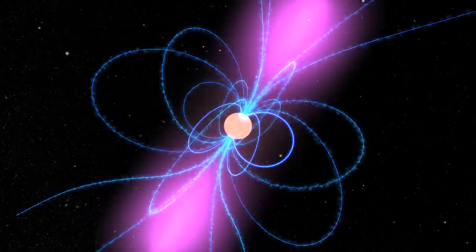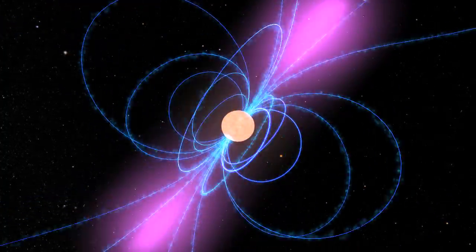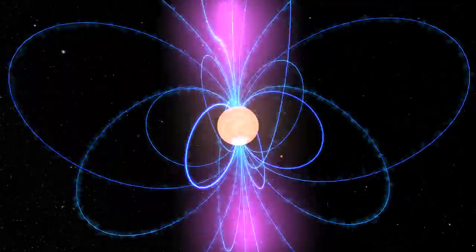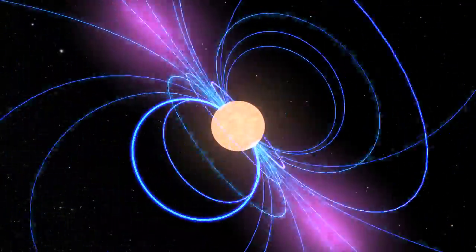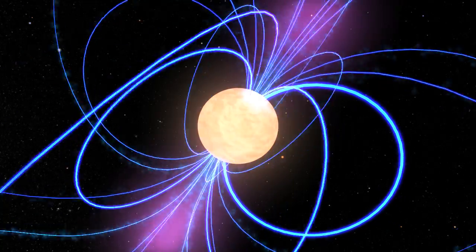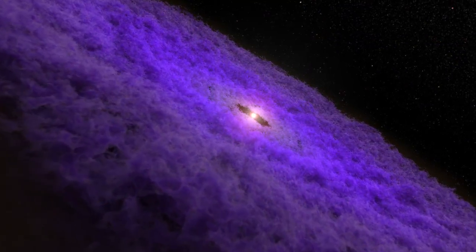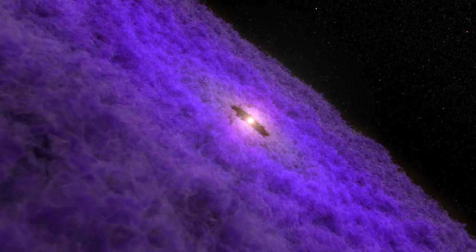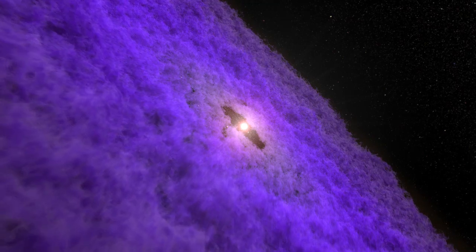A neutron star is what remains when a star several times the mass of the Sun collapses and explodes. With more than the Sun's mass packed into a sphere less than 18 miles across, these objects are incredibly dense. Just a sugar cube-sized piece of neutron star can weigh as much as all the water in the Great Lakes.